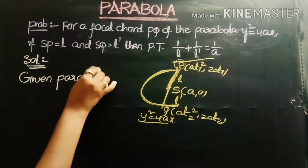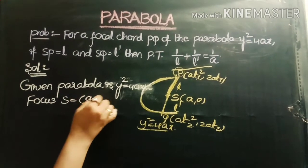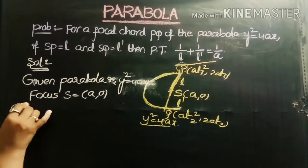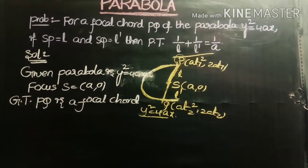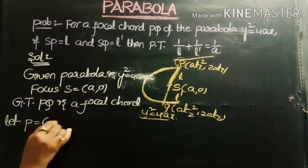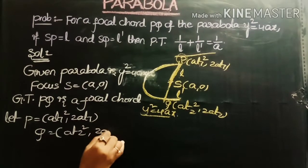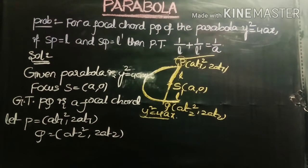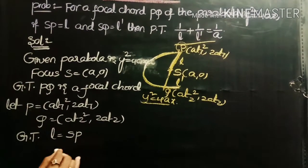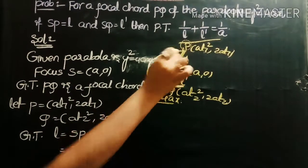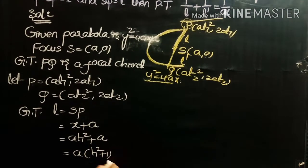So the given parabola is y² = 4ax, and focus S = (a, 0). Given that PQ is a focal chord. We take the coordinates of P and Q as: P = (aT1², 2aT1) and Q = (aT2², 2aT2). Also given that SP = L, which is the focal distance of P.